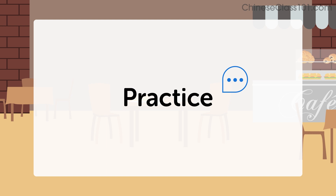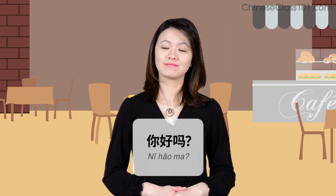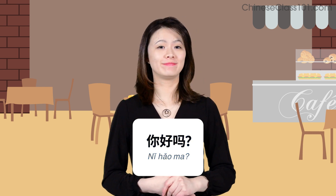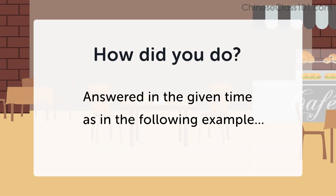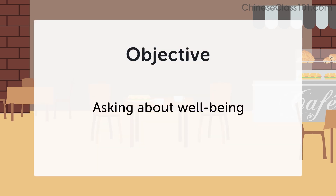Let's practice. 你在咖啡店看见殷如，问她好不好。 我很好，你呢？ How did you do? You can consider this practice exercise successful if you were able to answer in the given time and use the proper expression as in the following example: 你好吗？ Try this practice exercise again if you want to improve your fluency or skill in any of these areas.